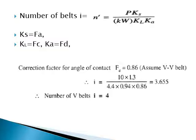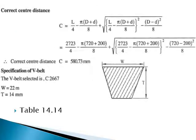Now calculate the number of belts with known values of Kl, Ke, Kw, and Ks. Kw is the rated power. Taking Ke = fd = 0.86, the number of belts comes out to 3.655, so rounding up gives 4 belts. For the correct center distance: C = L/4 − π(D + d)/8 + √[(L/4 − π(D+d)/8)² − (D−d)²/8]. Substituting all values gives the correct center distance C = 580.73 millimeters.